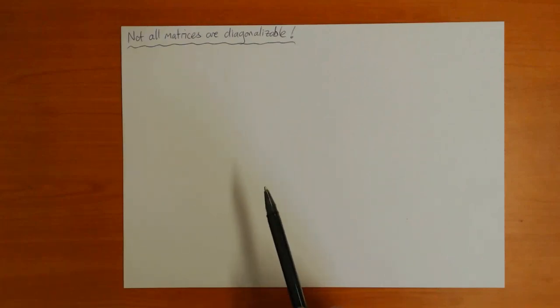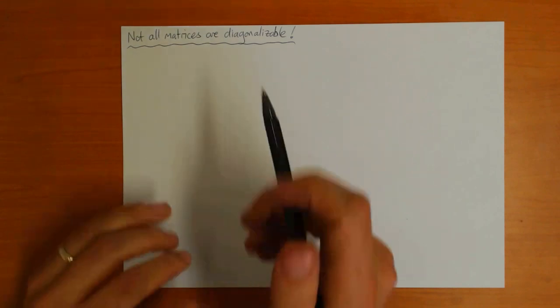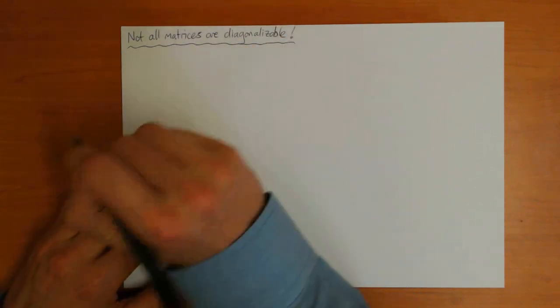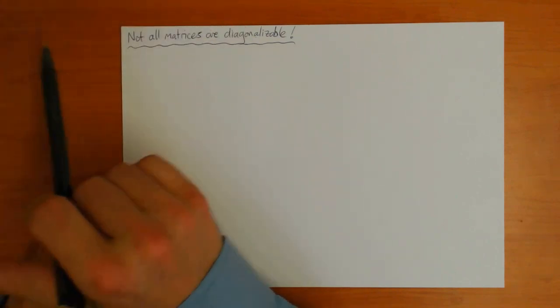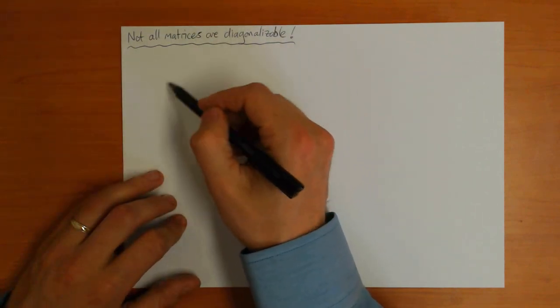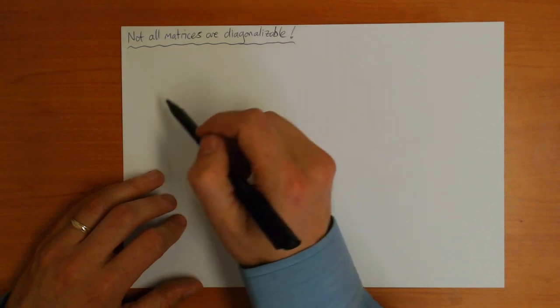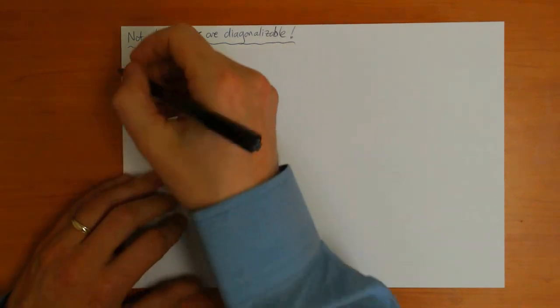I mentioned briefly in the last video that although the diagonalization formula is very useful, you can't always do it. In other words, not all matrices can be diagonalized in the way I described. The critical point was that in order to derive the diagonalization formula, we needed to assume that the matrix has as many eigenvectors as the dimension of the space. So an n by n matrix should have n eigenvectors, and this is not always true.